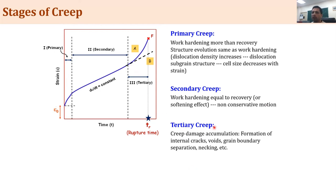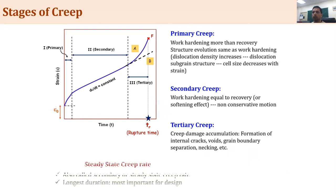The third stage is tertiary creep where damage accumulates: voids form, coalesce, and there may be cracks and other types of damage leading to eventual failure. The secondary stage is also called steady-state creep because the creep rate is constant over that period and it is the longest duration — the most important from the design perspective.